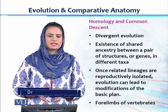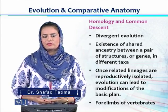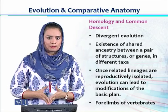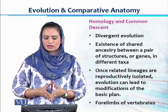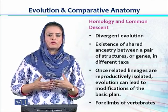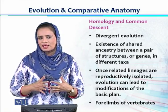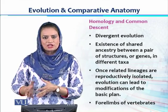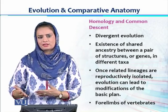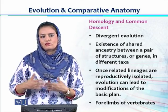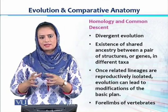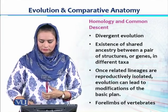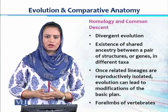In comparative anatomy, we have two major concepts. One is called homology and the other is called analogy. These help us in evolutionary studies. Homology gives us the concept of divergent evolution, which means that there was a common ancestor. With the passage of time, when the environment changed, those ancestors started facing different types of environments in different regions of the world, and they started developing characters suitable for that changed environment. So according to homology, there are species which look very dissimilar from each other, but they have a common ancestor.